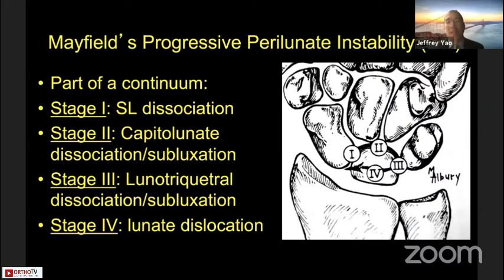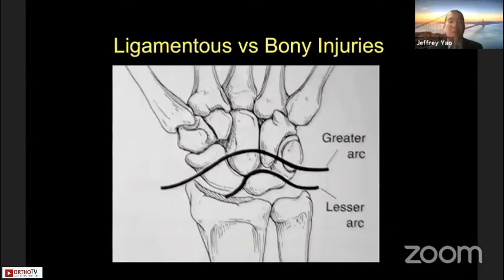Mayfield initially described progressive perilunate instability as a continuum, classically starting on the radial side at the scapholunate interval with Stage 1, advancing clockwise — at least in this right-sided wrist — to capitolunate dissociation at Stage 2 or fracture of the capitate, Stage 3 with injury to the LT ligament, and Stage 4 with a complete lunate dislocation. We further classify these as ligamentous versus bony injuries: greater arc injuries involving any bone fracture, and lesser arc injuries being purely ligamentous.